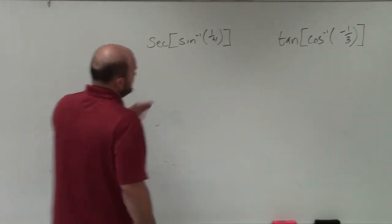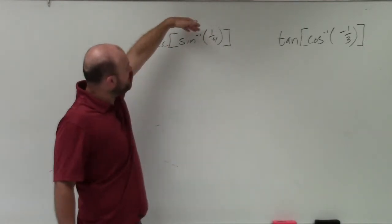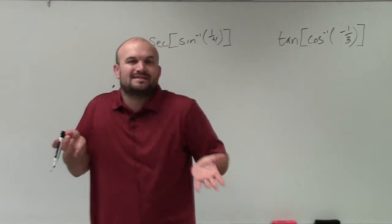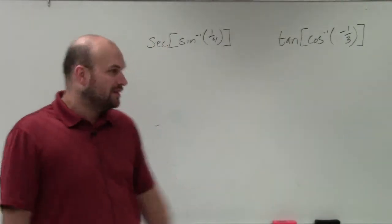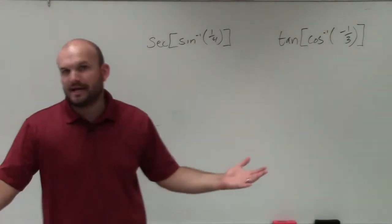And again, the reason I'm going to be using triangles here is because the points that I'm taking the inverse of, the inverse sine of 1/4 and the inverse cosine of 1/3, are not general points that I'm aware of that are on the unit circle. So therefore, to be able to evaluate for their angle, I'm going to create a triangle.